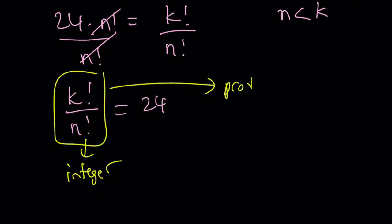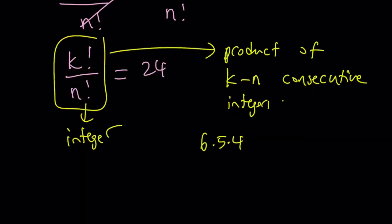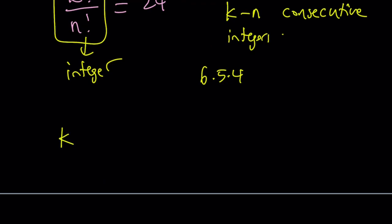So it's kind of like the product of k minus n consecutive integers. Now, what is that supposed to mean? For example, 6, 5, 4 is the product of three consecutive integers. The largest one is 6. In this case, we have something like k, and then k minus 1, and so on. This is just a product. But we only have k minus n numbers in this product.